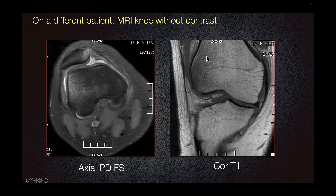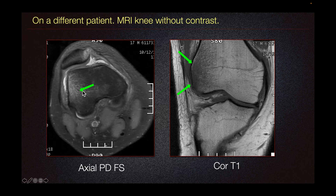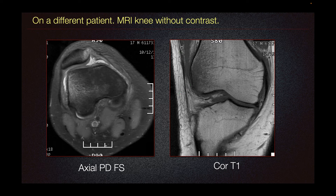On our coronal T1 imaging, we can see a region of T1 hypointensity in the lateral femoral condyle correlating to the edema seen on our axial PD fat-sat imaging. One of the risk factors for patellar dislocation or subluxation is trochlear dysplasia.